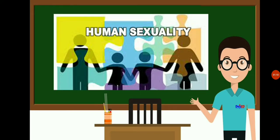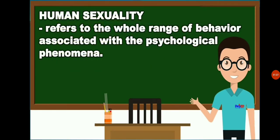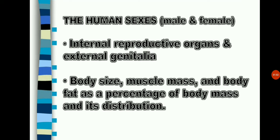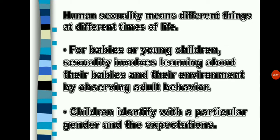In human sexuality, it refers to the whole range of behavior associated with the psychological phenomena of sex. Human sexuality means different things at different times of life. For babies or young children, sexuality involves learning about their bodies and their environment by observing adult behavior.